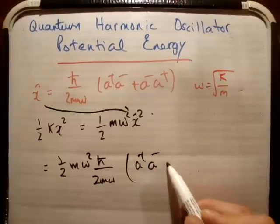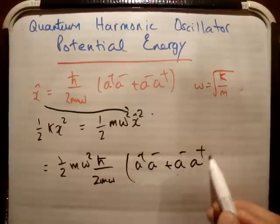So that's 1 half m omega squared h bar over 2m omega, a plus a minus plus a minus a plus, like so.